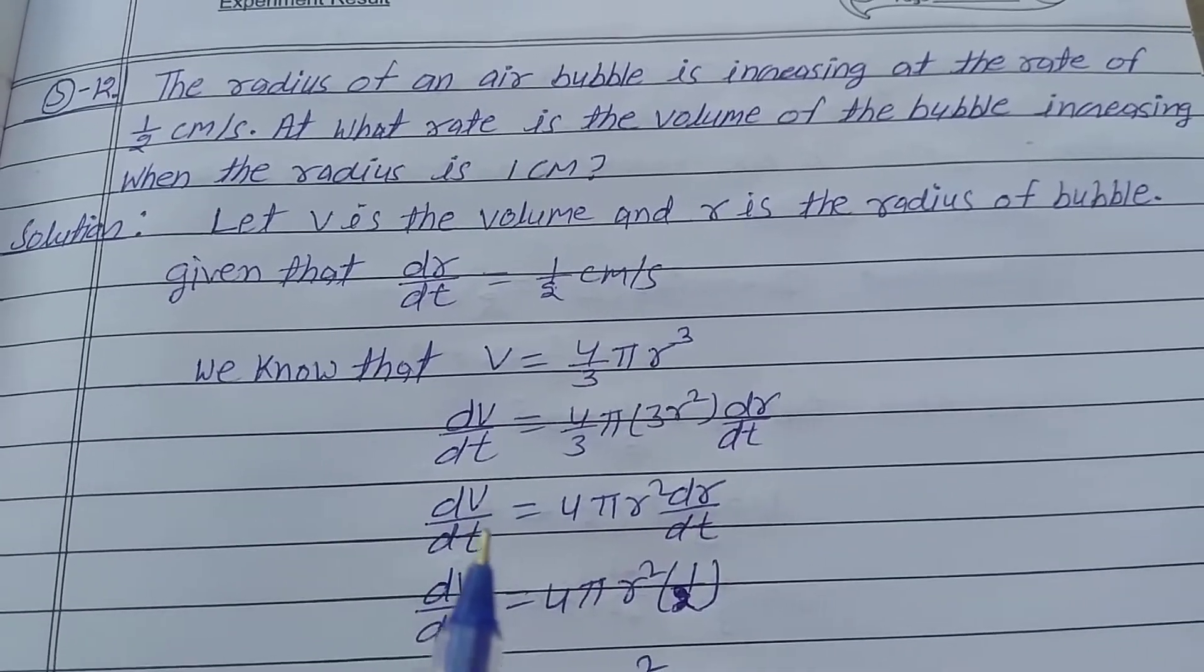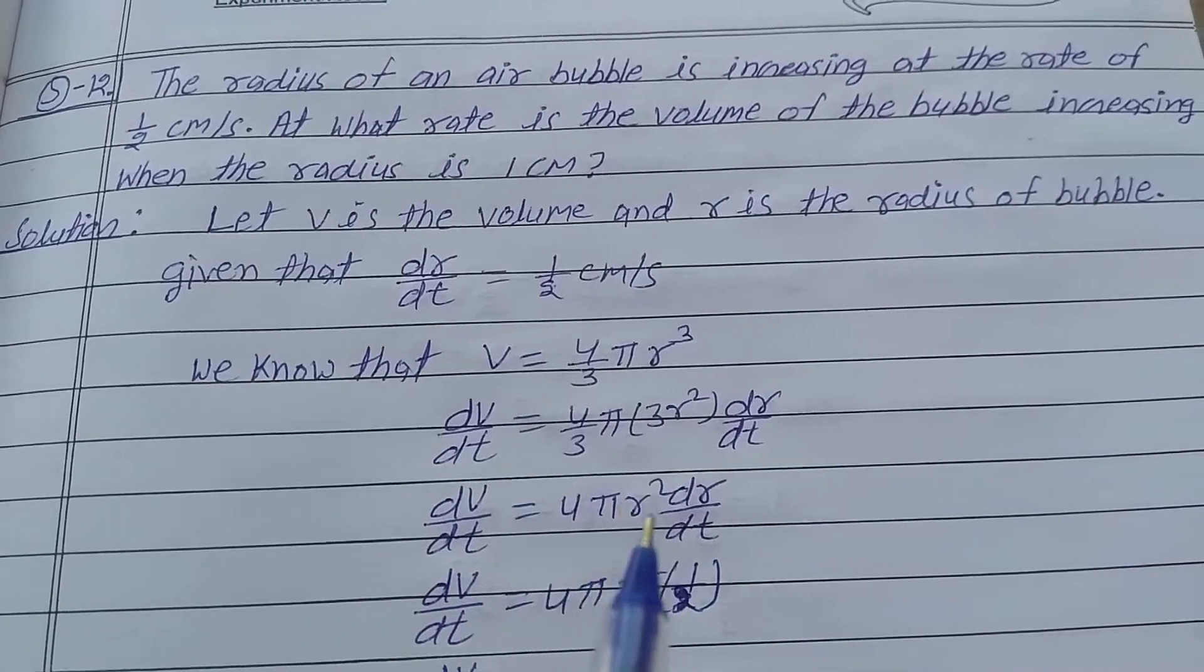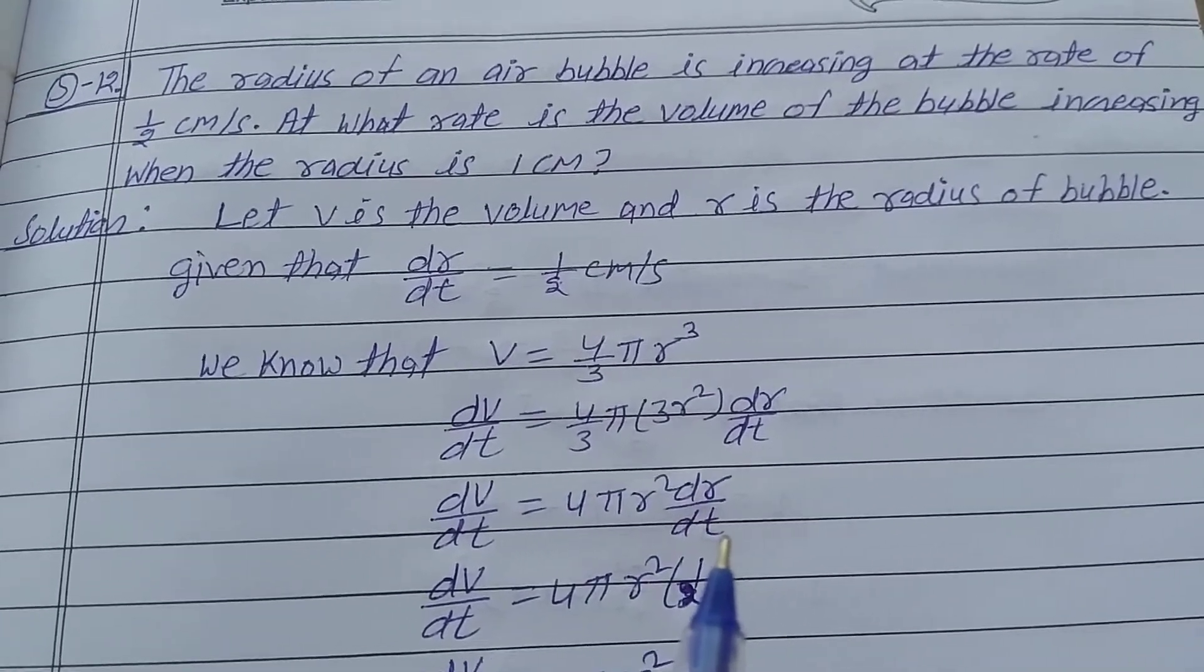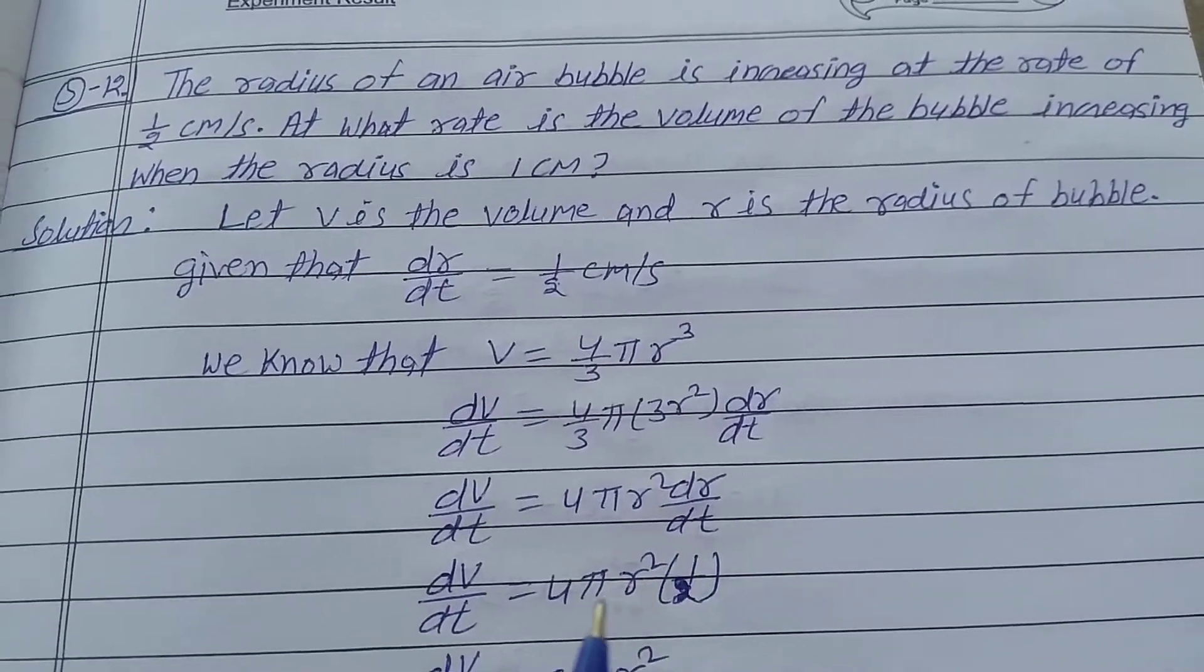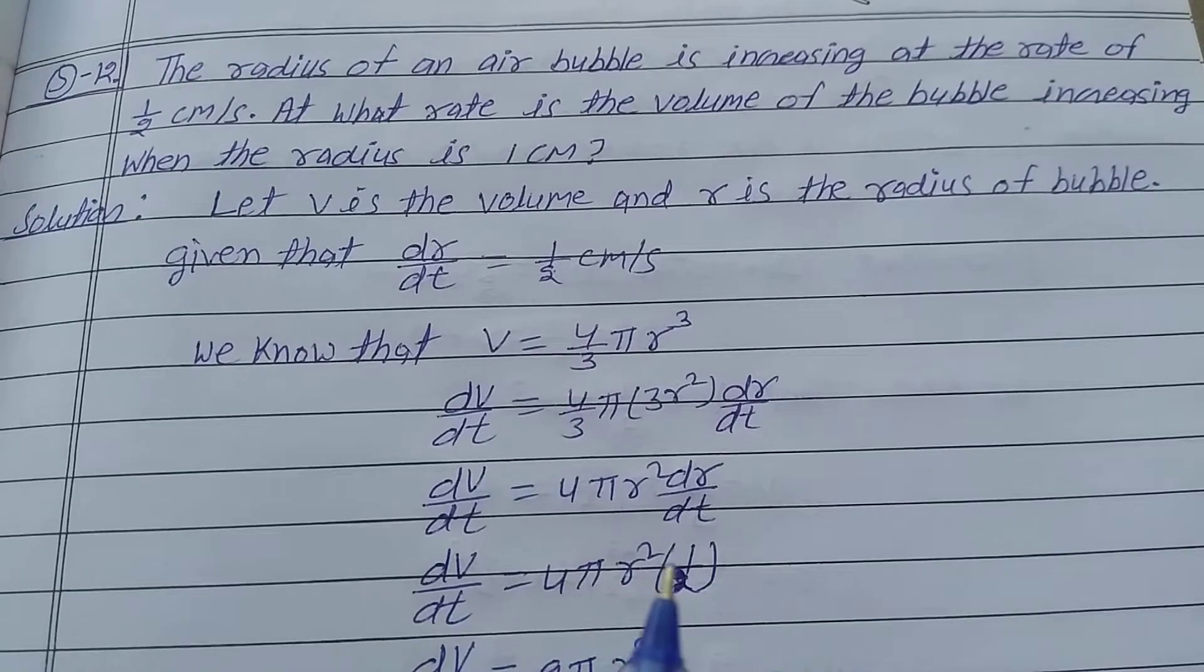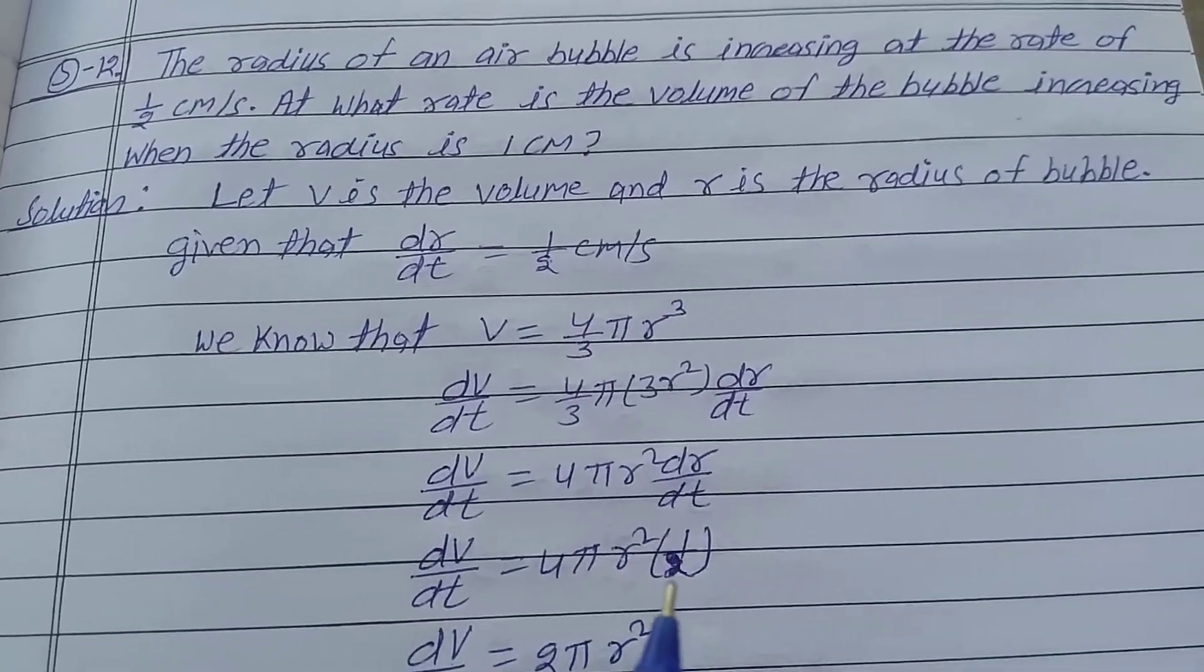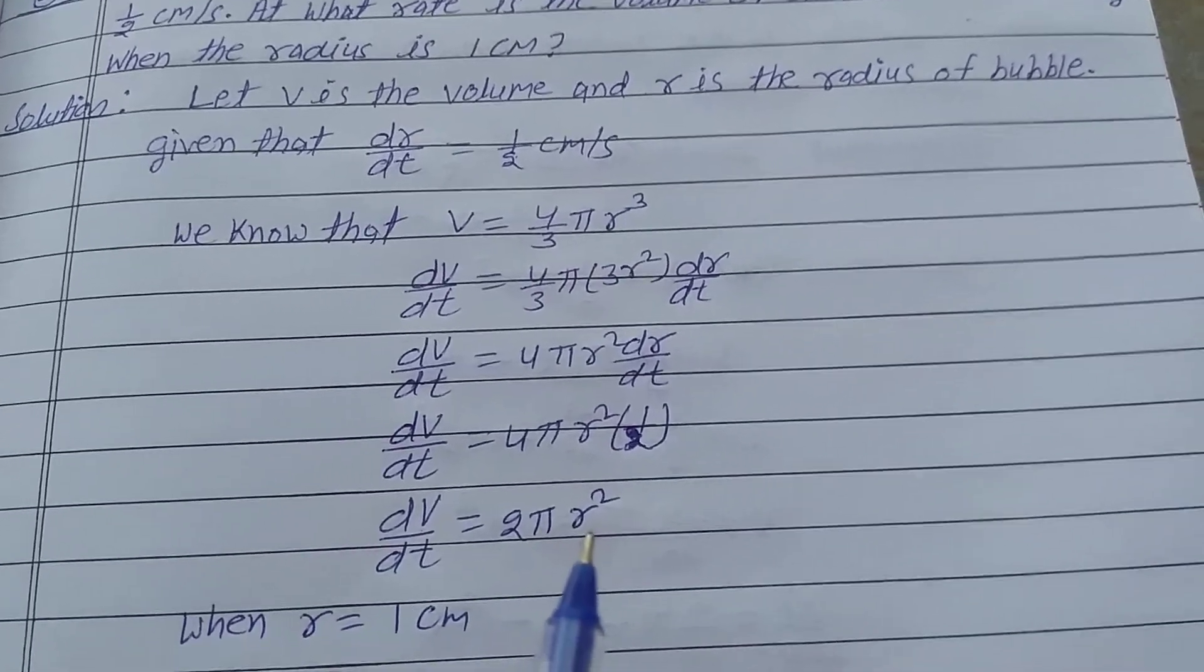Simplifying, the 3s cancel, so dV/dt = 4πr² × dr/dt. We already know that dr/dt = 1/2, so dV/dt = 4πr² × (1/2) = 2πr².